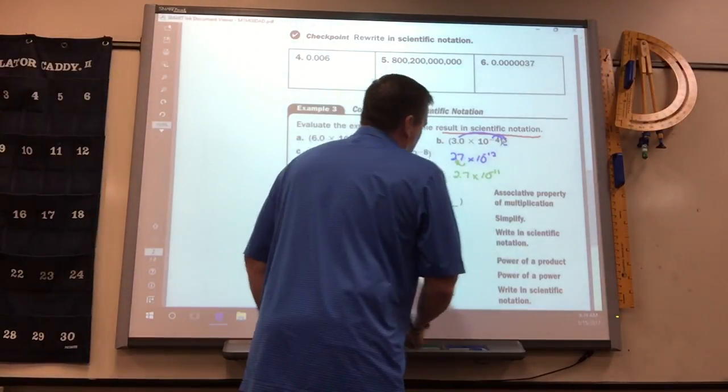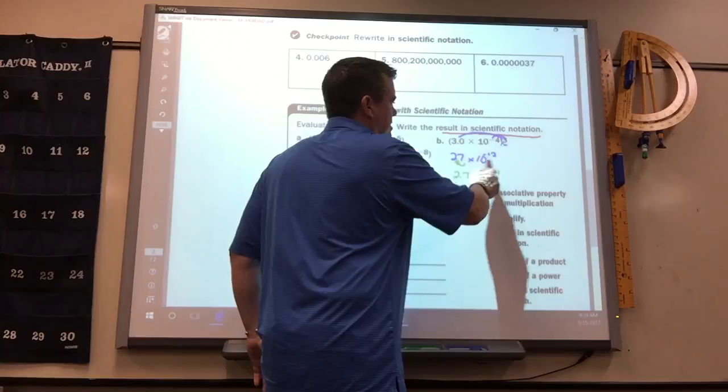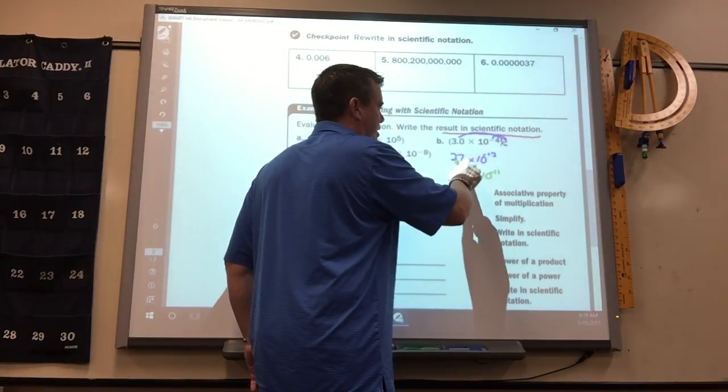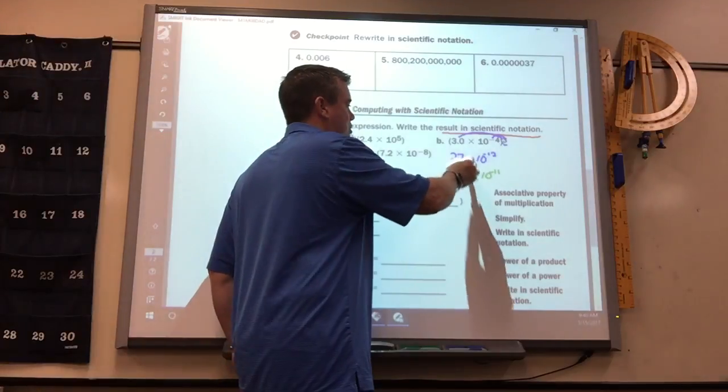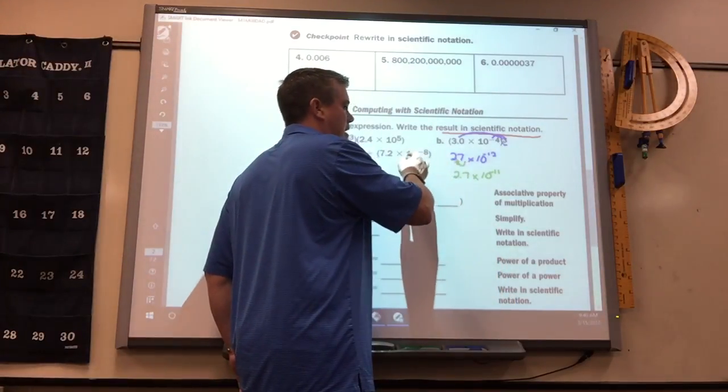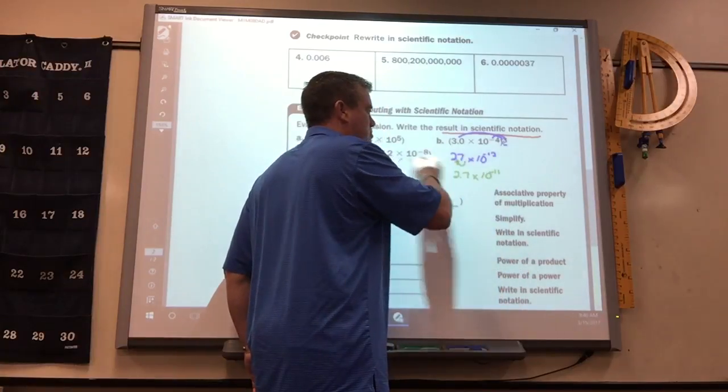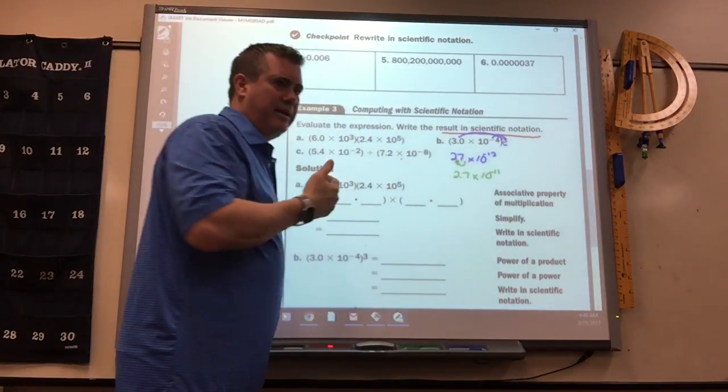And again, if you think about it, since this was negative 12, that means from here, to get it to the actual number, I'd have to move it 12 spots to the left, right? Well, if it moved to here, I'd only have to move it 11 spots. Okay.